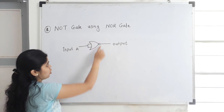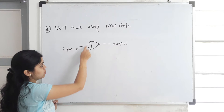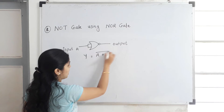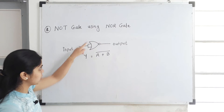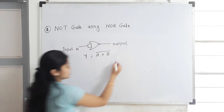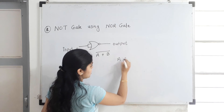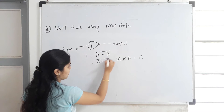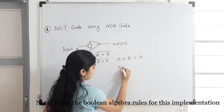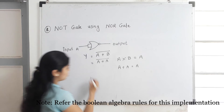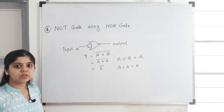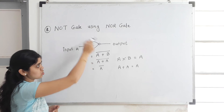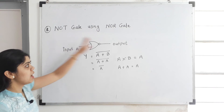I have drawn a NOR gate with both of its inputs connected together. So the output Y is equal to A plus B bar, which is the mathematical equation for the NOR gate. But as both inputs are the same, I can write A is equal to B, so I write A plus A bar. By using the Boolean algebra rules, A plus A can be written as A only. So I get A bar at the output. This A bar is nothing but the NOT gate operation. So this implementation gives you the NOT operation at the output.